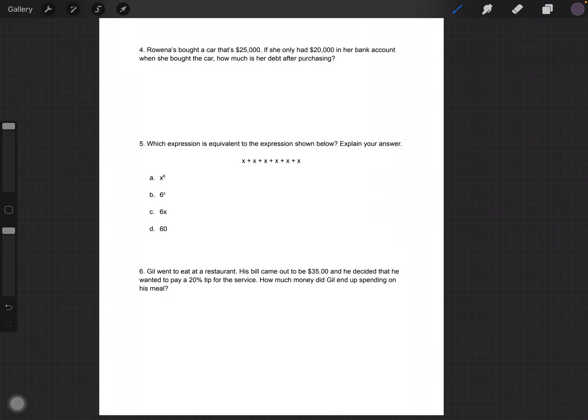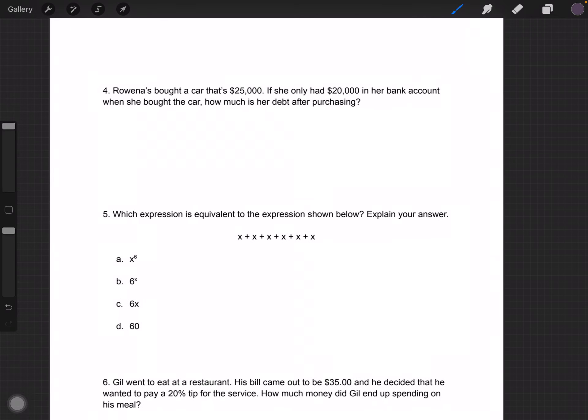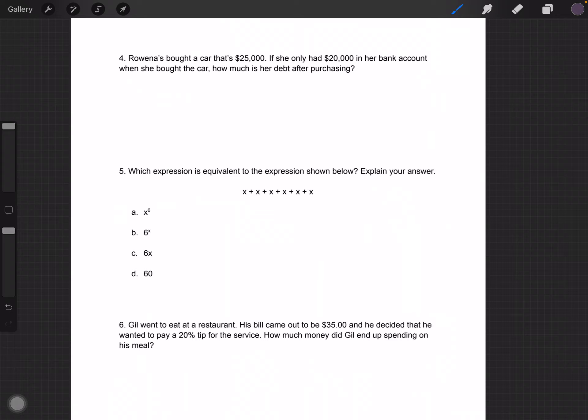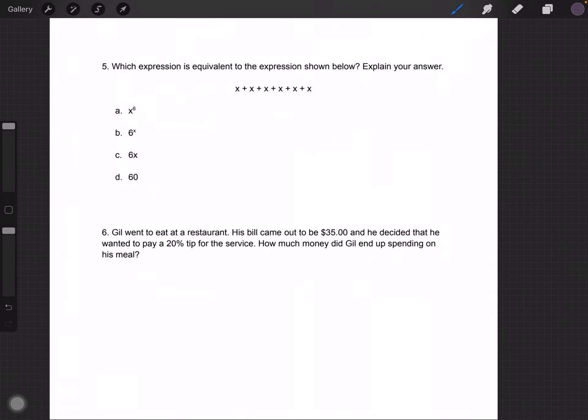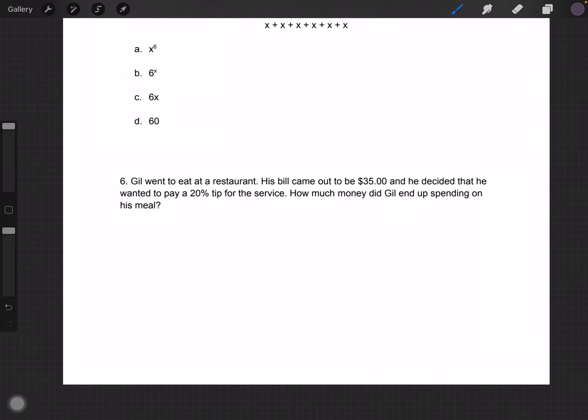Let's do one on the last page. Number six. Jill went to eat at a restaurant. His bill came out to be $35, and he decided that he wanted to pay a 20% tip for the service. How much money did Jill end up spending on his meal? His meal, meaning his total that he paid before he left. 20% tip for the service. The 20% is based off of the $35. So he's paying $35 and 20% of the $35. $35 times 0.2 gives us $7.